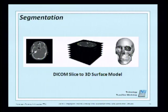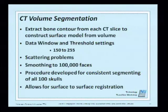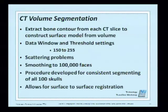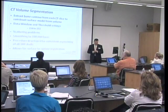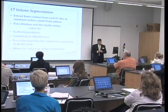Segmentation used DICOM to create the 3D surface model. We extracted bone contours from each CT slice to construct the surface. The data window used values from 150 to 255. There were some scattering problems because some patients had dental implants that caused scatter in the image. Smoothing was necessary given the complexity of the cranium — we had around 100,000 faces. A procedure was developed for consistently segmenting all 100 patients, allowing for surface registration.